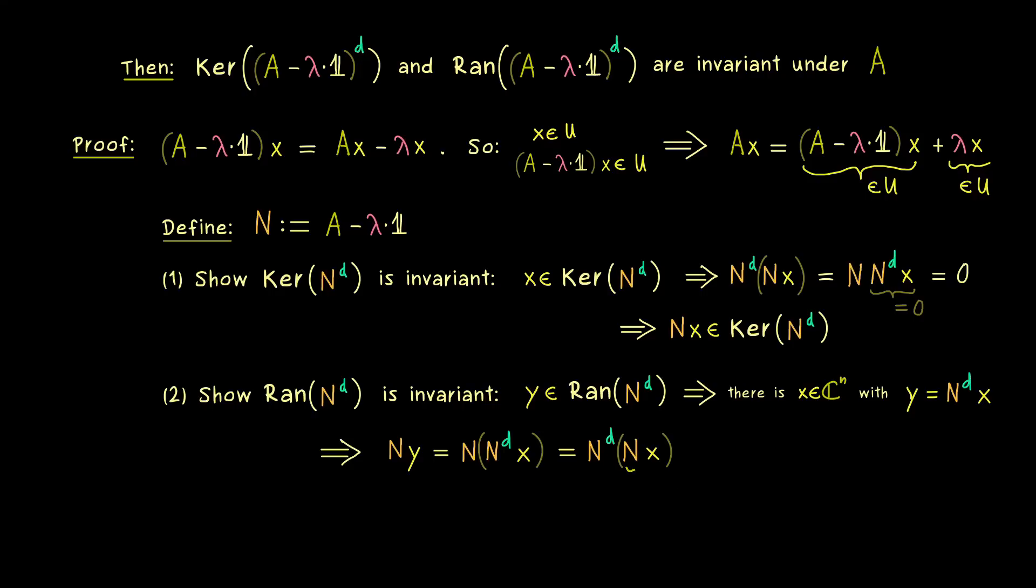So we just have to see that N times x is our new pre-image, and we can call it x tilde. So N times y has the same form as y, so it also lies in the range of N to the power d. And with that, we are already done: also the range is invariant under N and therefore under A.